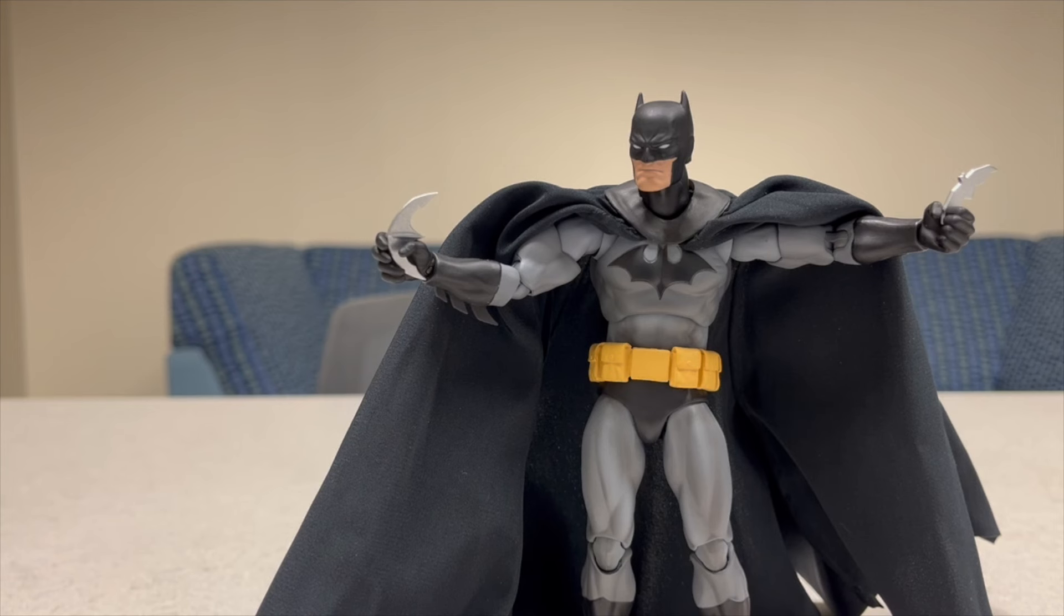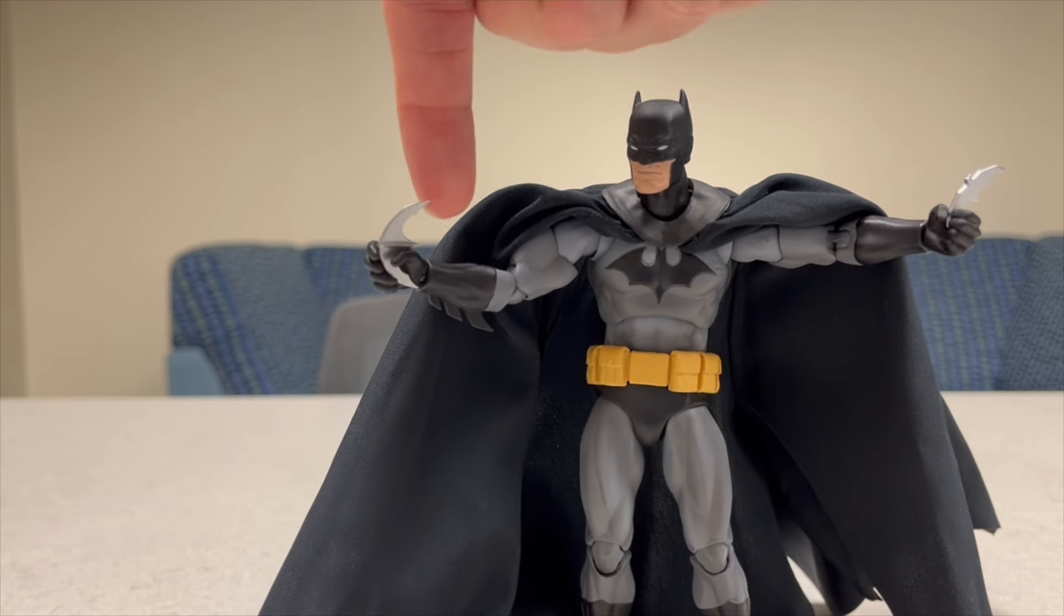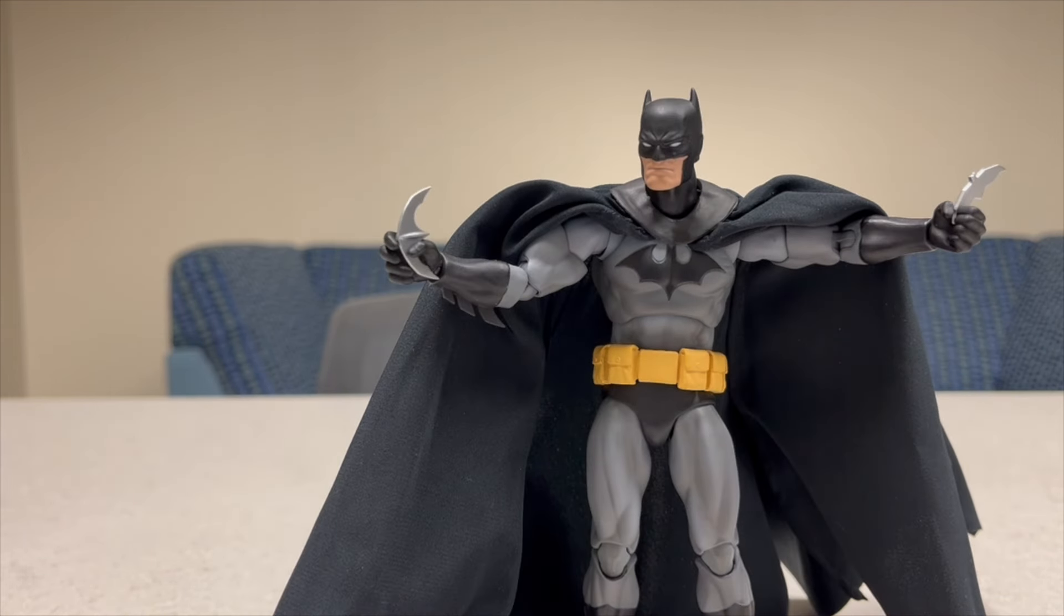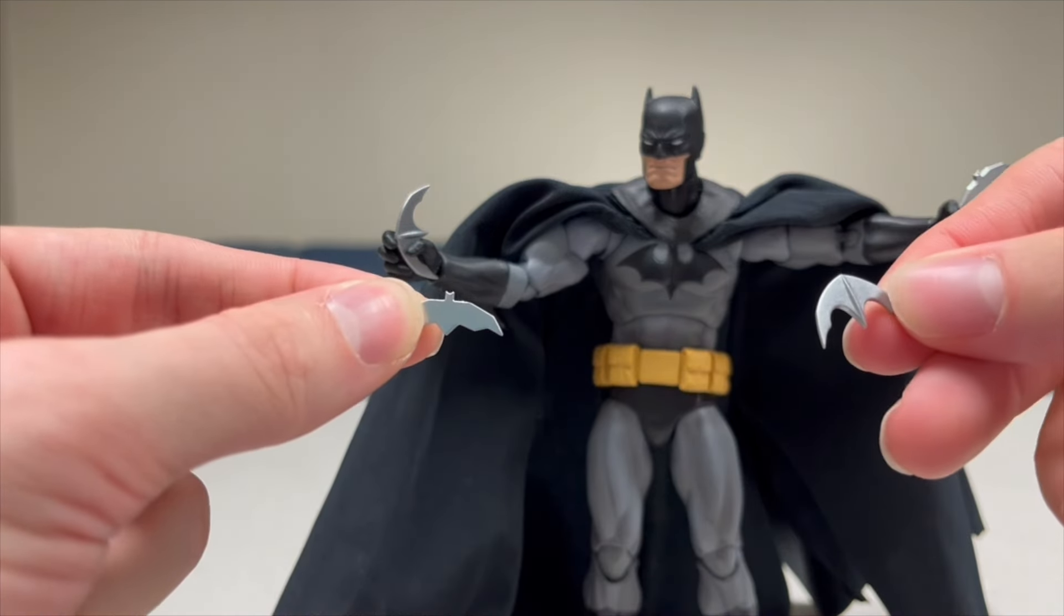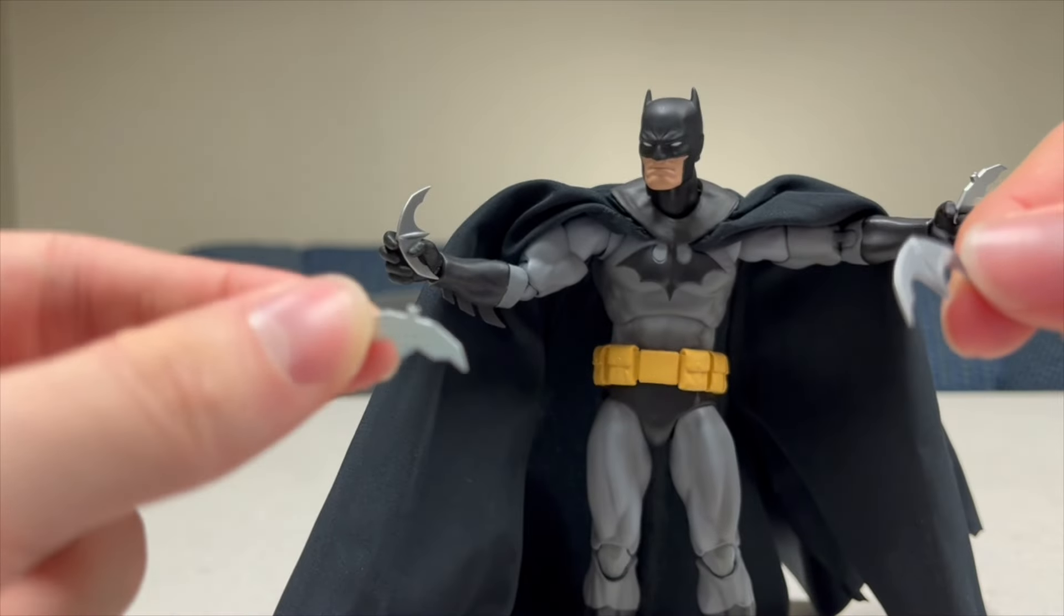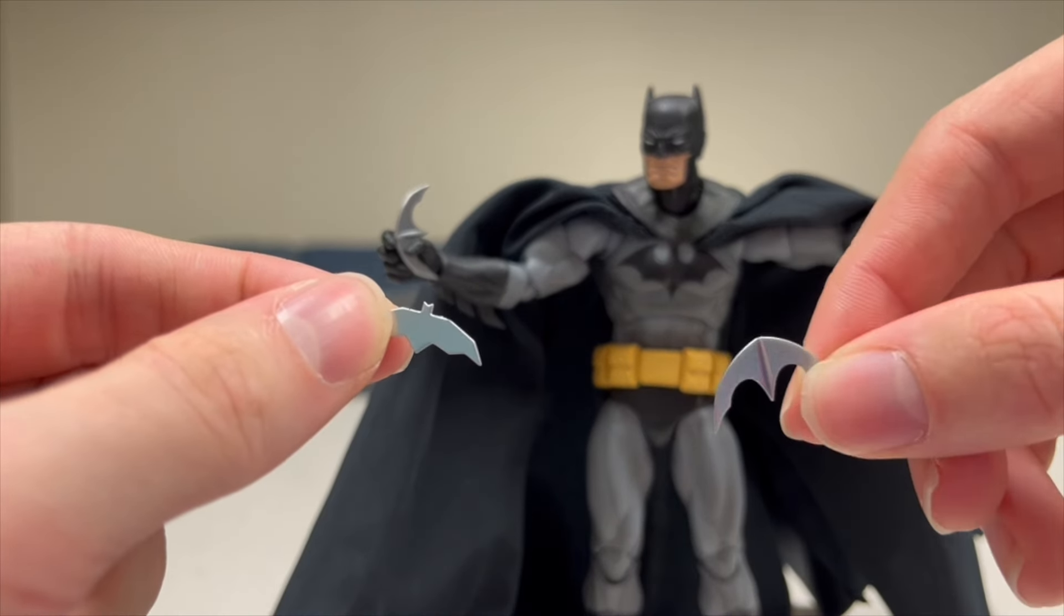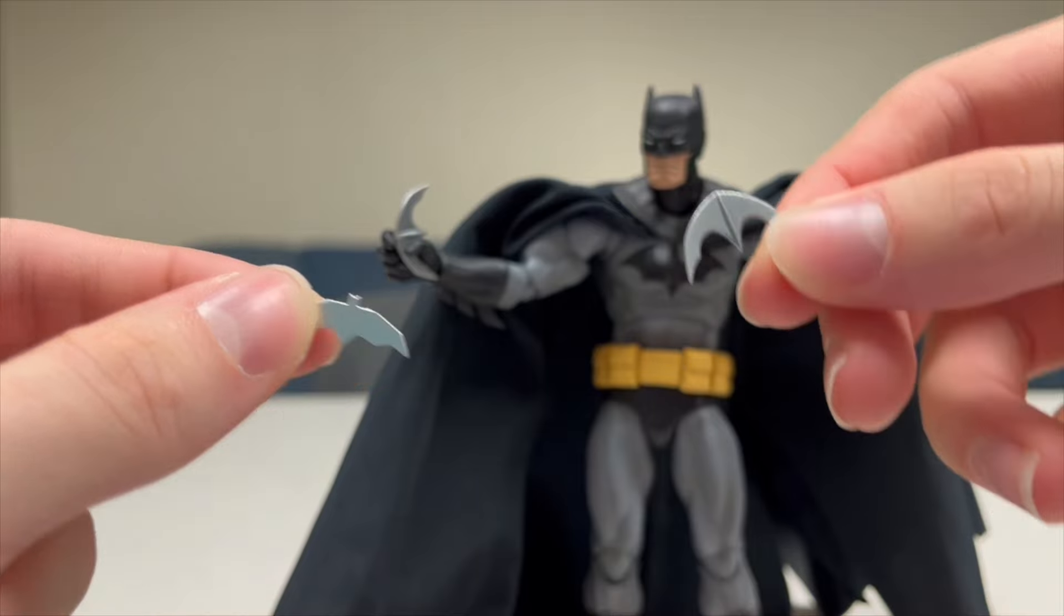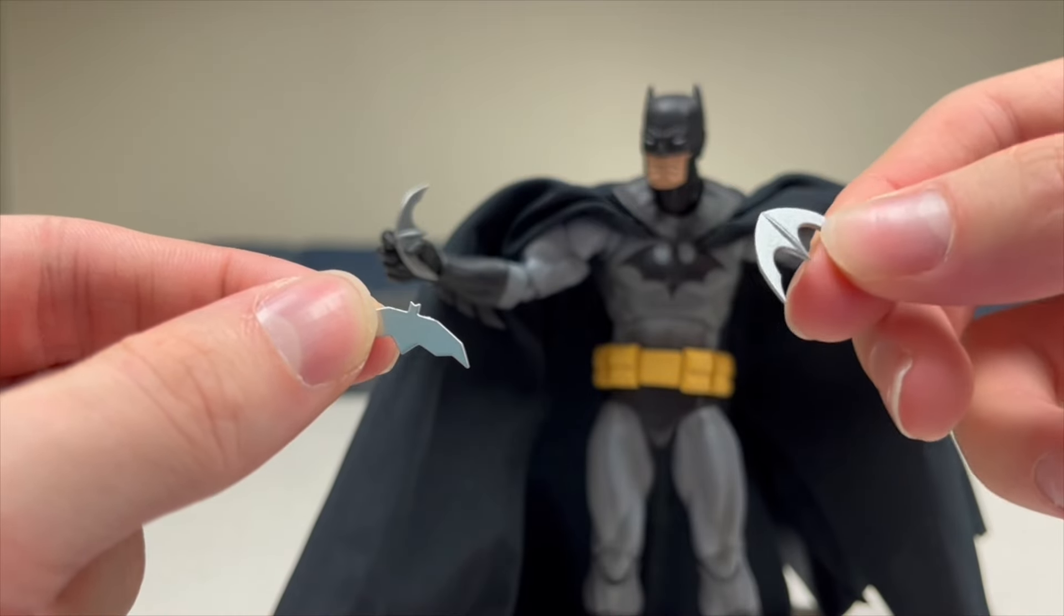Then here we are with Batman using two different grabbing hands to hold his two different kinds of batarangs that he came with. I must say that this hand right here fits the batarang much better than this one. This one kind of falls out a little bit easily. Maybe that hand isn't intended for the batarangs, I'm not really sure, but it is like a grabbing type hand. But this one works really well. And also they give you two of each, which is really nice. Here's kind of the classic batarang, and then here I would think is like a more modernized version because it looks like it's more practical and less scenic.